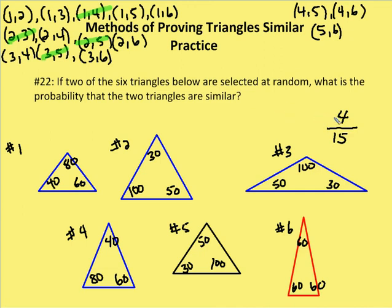That's the lesson. 4 out of 15 is the probability that two triangles selected at random will be similar. Remember, probability has to be a value between 0 and 1. 0 probability means that it will never, ever happen. 1 means it will happen all the time. We've got something in between that in this particular case.